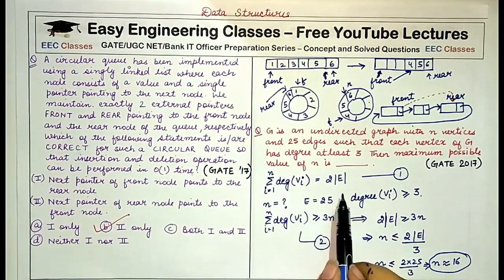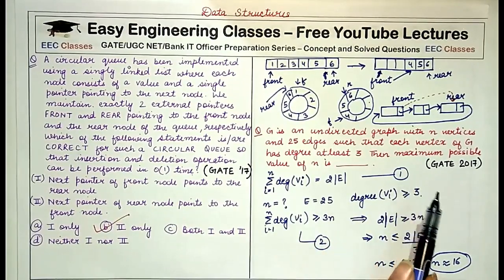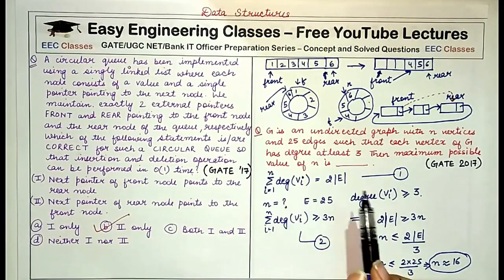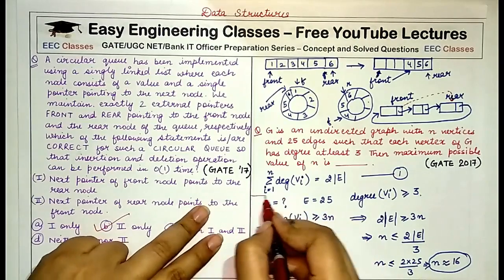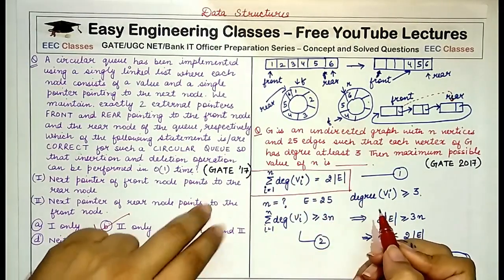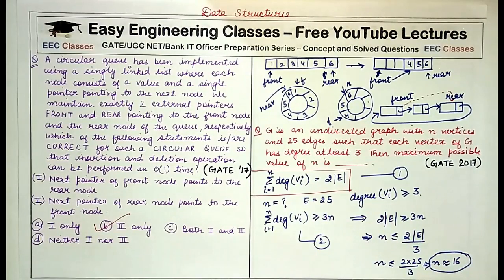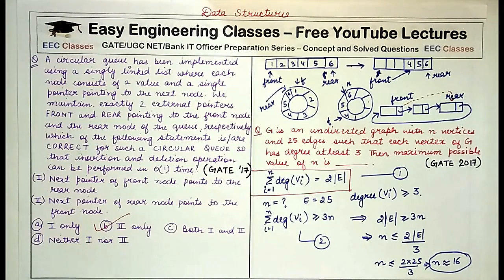That's all for today's lecture. The key formula to remember is: the sum of degrees of vertices equals twice the number of edges. I hope you understood both questions. Please tell us in the comments how you liked the video, share it with your friends, stay tuned to Easy Engineering Classes, hit the bell icon, and subscribe to the channel for more lectures on this preparation series and other computer science subjects. Thank you for watching.